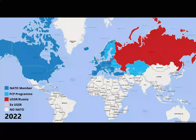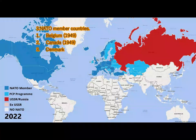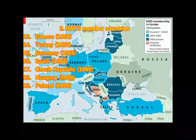The NATO member countries are as follows. In 1949, there were 12 founding members: Belgium, Canada, Denmark, France, Iceland, Italy, Luxembourg, Netherlands, Norway, Portugal, United Kingdom, and the United States of America.